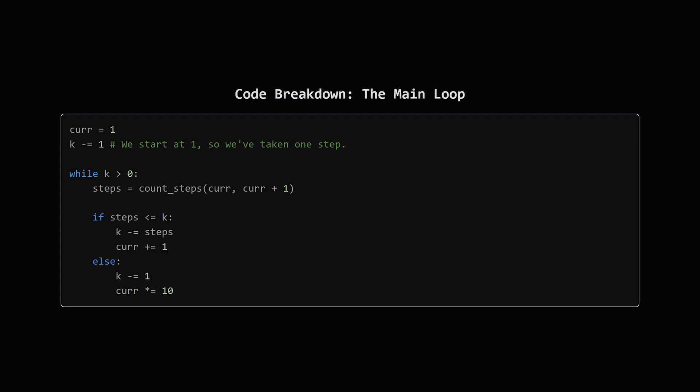This is the heart of our algorithm. We start our current number at 1. And since we've already found the first number, we subtract 1 from k. Now, our loop continues as long as we still have steps to take.